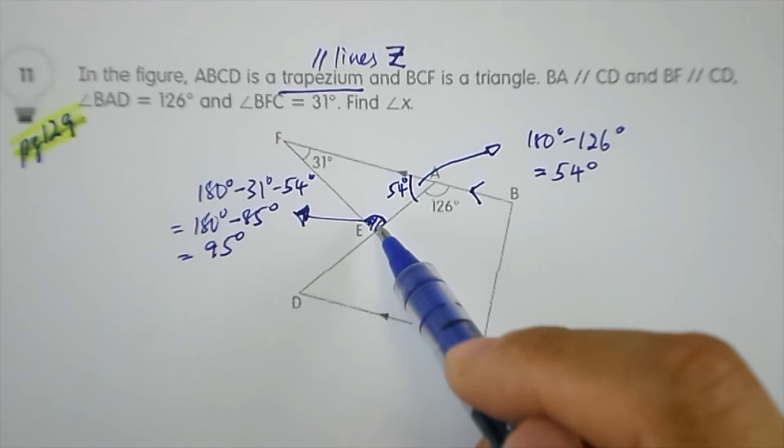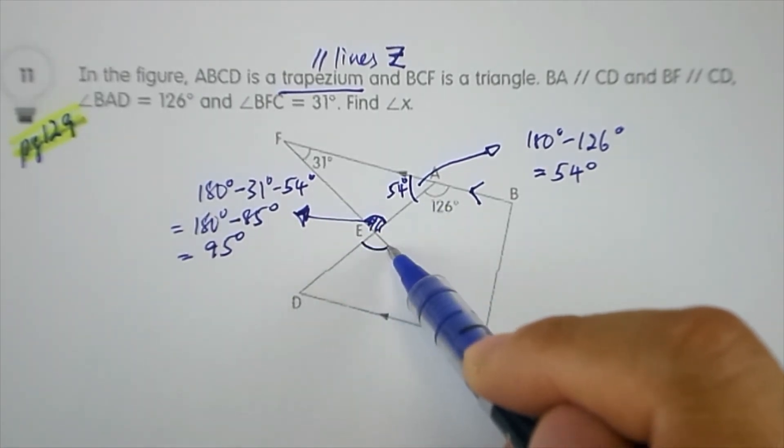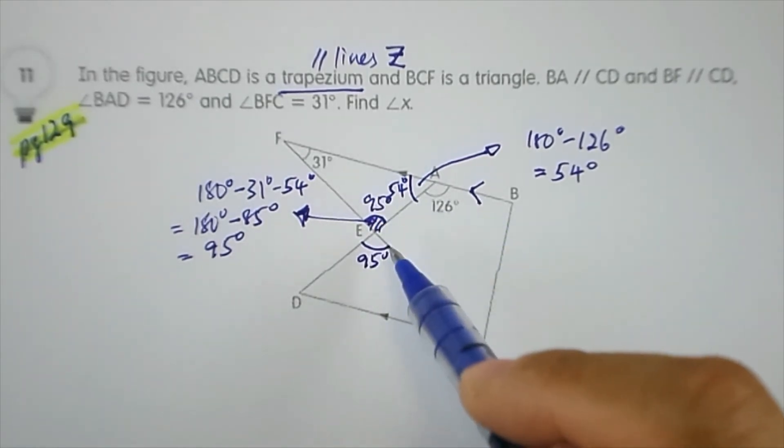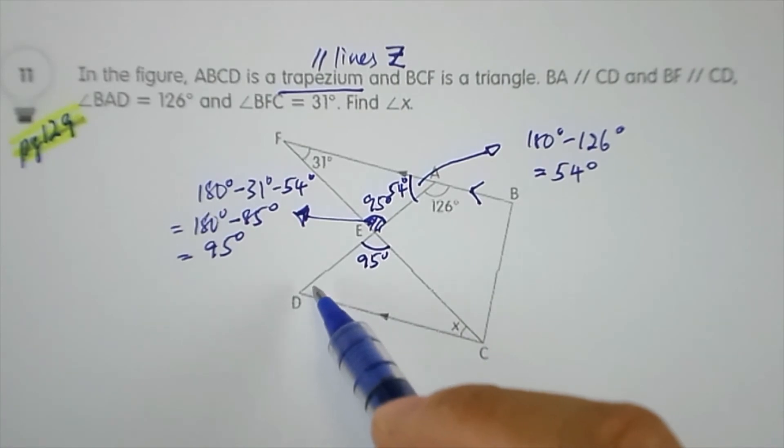If we have 95 degrees over here, the vertically opposite angle will also be 95 degrees. If this angle is 95, we need to find one last angle to determine angle X.